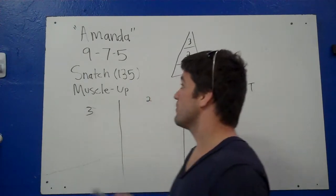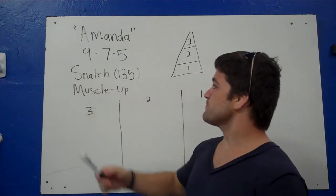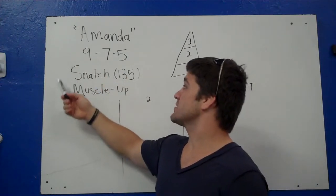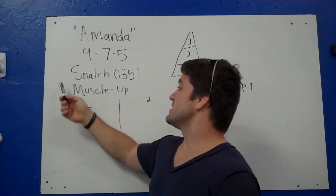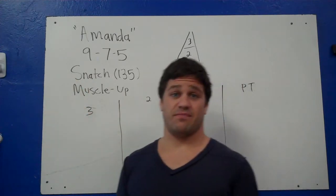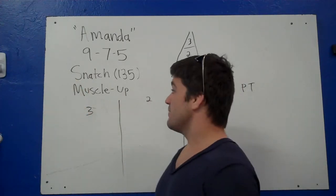Go figure, right? Go figure. It's very low volume. 9-7-5. Nine snatches, nine muscle-ups, seven snatches, seven muscle-ups, five and five at a time. It seems pretty fast, but you'd be surprised.